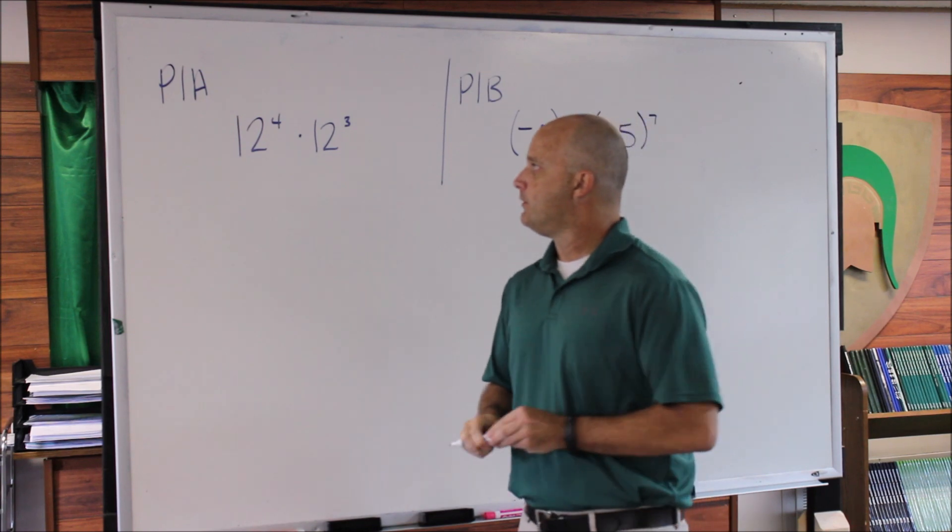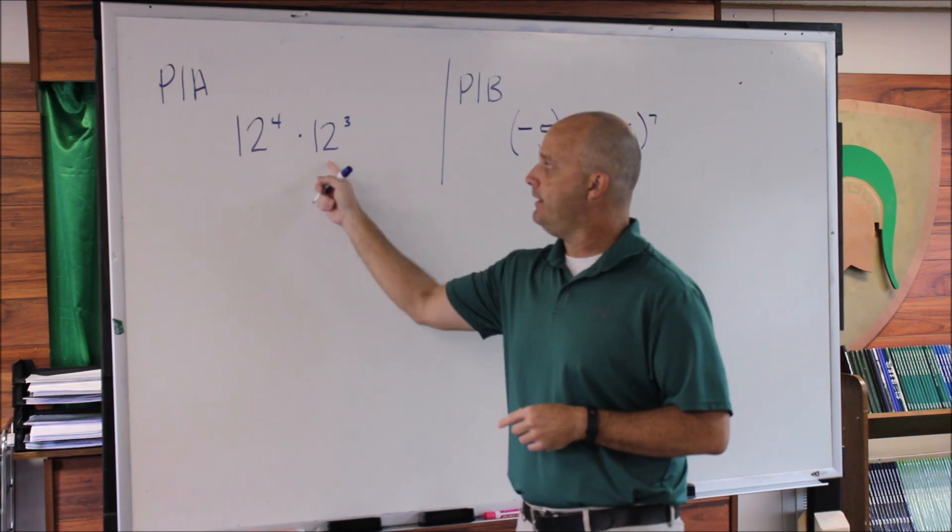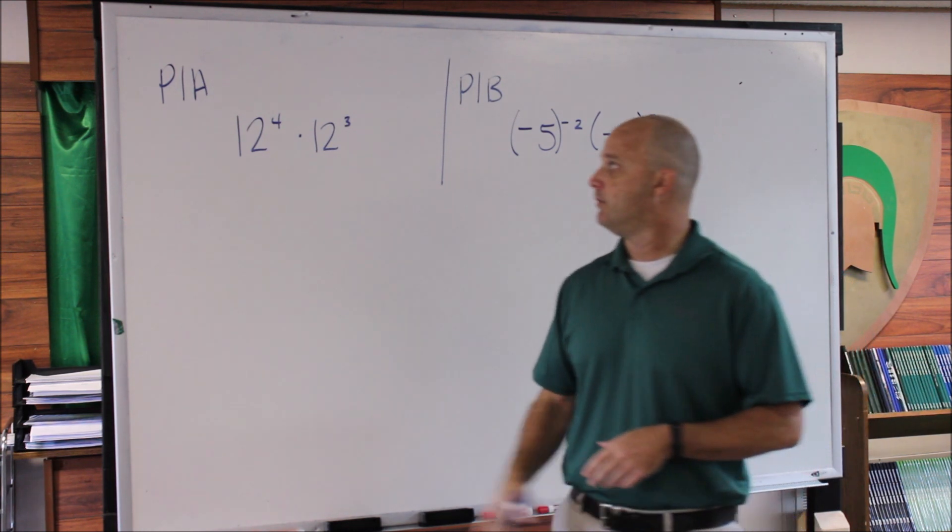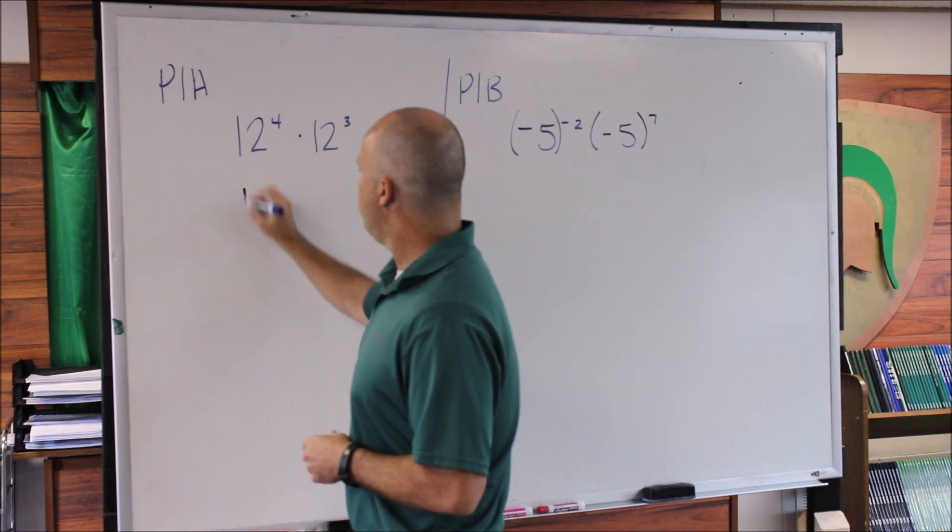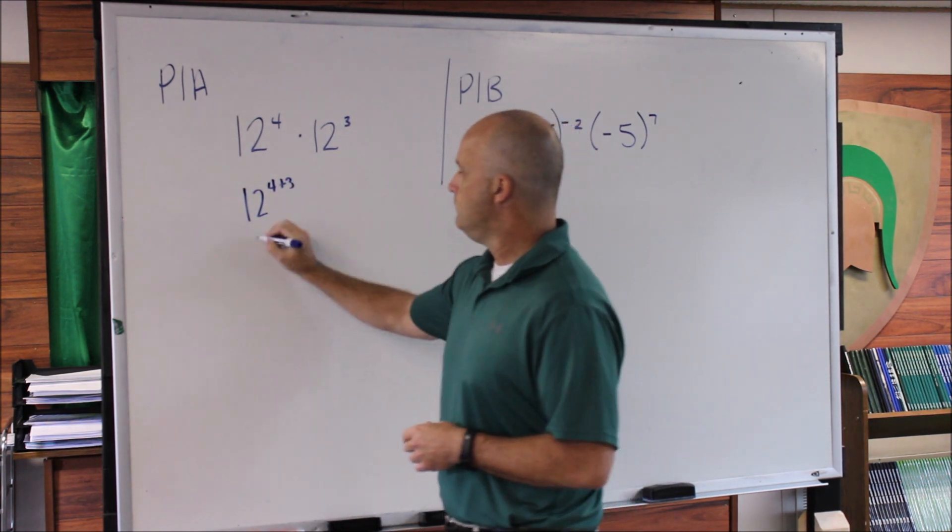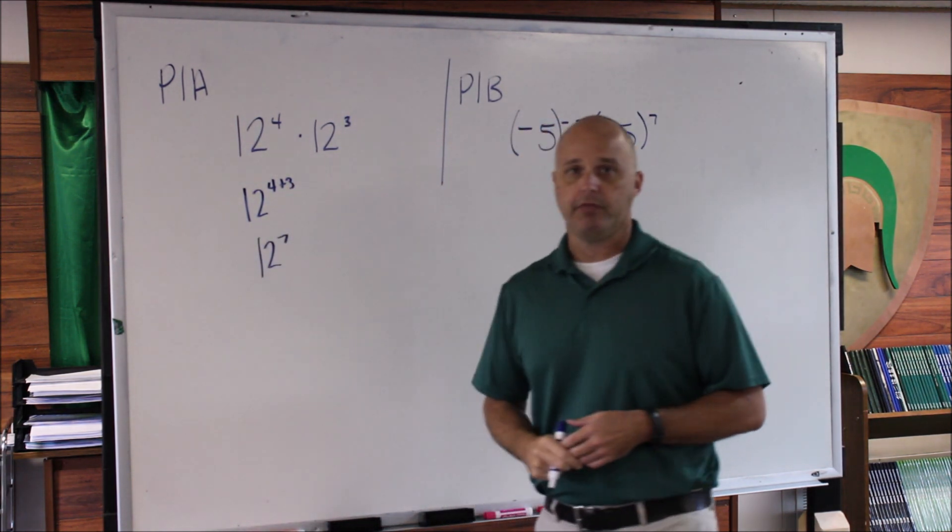Since we know our bases are the same and we're multiplying them, the rule is add the exponents. So we get 12^(4+3). And 4 + 3 is 7. So the answer is 12^7.